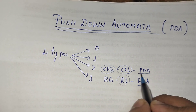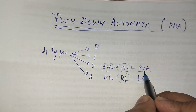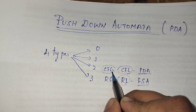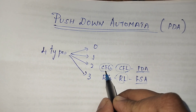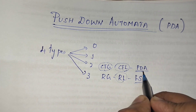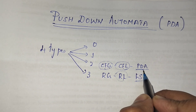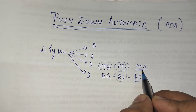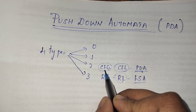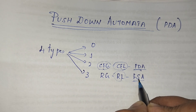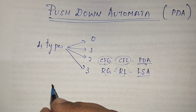Pushdown automata is a way to implement context-free grammar. Context-free languages are generated by context-free grammars and are recognized by pushdown automata. In a similar way we design finite automata for regular grammar, a pushdown automata is represented using seven tuples.